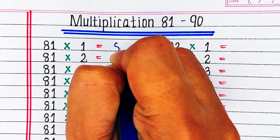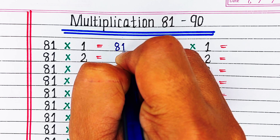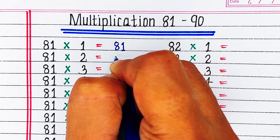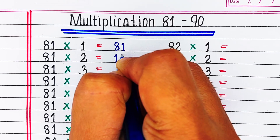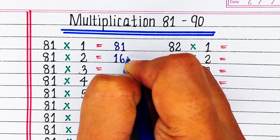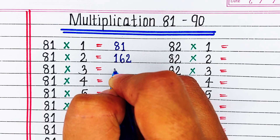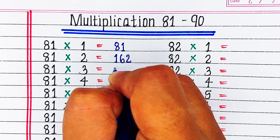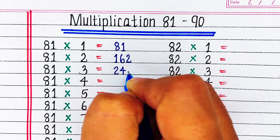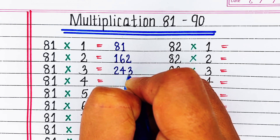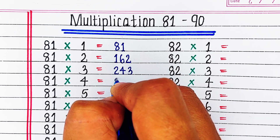Hello viewers, welcome to our channel Try to Learn. In this video, we will learn and write multiplication table from 81 to 90. If you find this video helpful, please hit the like button and for more such videos, consider subscribing to our channel Try to Learn.